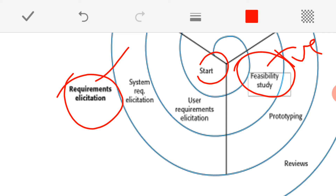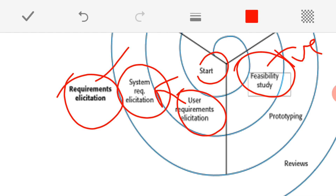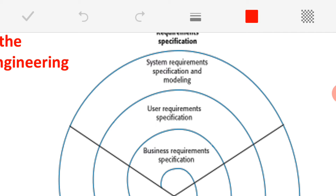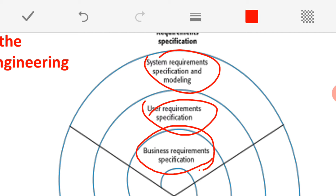Once the feasibility study is positive, the requirement elicitation process will start. Requirement elicitation means identifying the different stakeholders — end users or any person directly or indirectly related to the software to be developed. You communicate with those stakeholders and collect different types of requirements, called user requirements. These user requirements are then converted into detailed technical requirements called system requirements. Once this is done, we go for requirement specification, defining business requirement specification, user requirement specification, and system requirement specification using standard formats, mathematical representations, system models, or graphical representations.